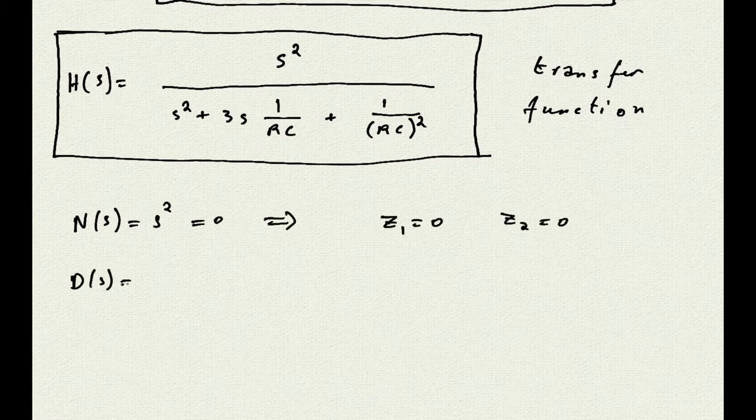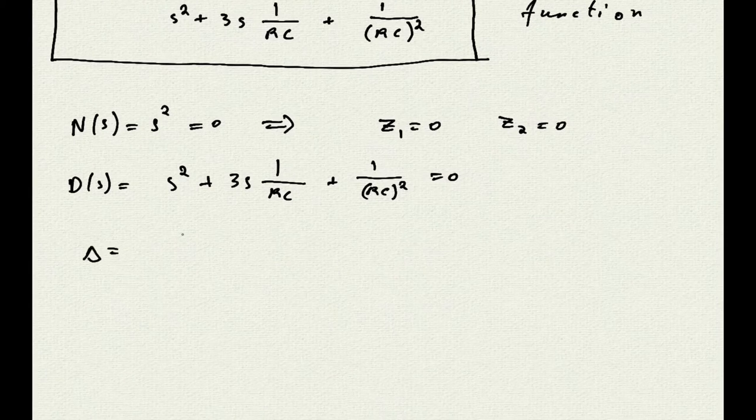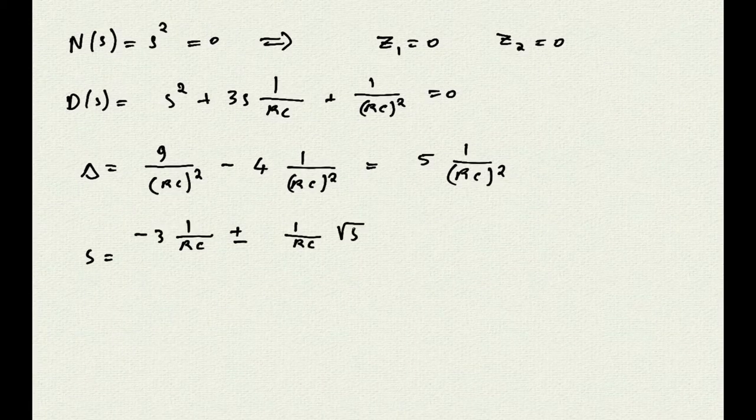To find the two poles, we need to go through some more math to actually find the roots of the denominator equation. Fast forward a little bit and here is the list of all four points.